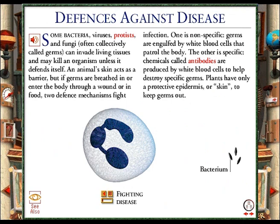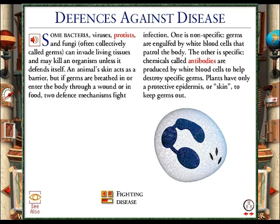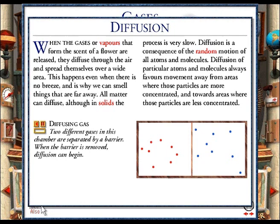When a white blood cell detects the presence of bacteria, which it does by the chemicals the bacteria release, it moves towards them. Once it is close enough, the white blood cell wraps itself around the bacteria, totally surrounding them. The white blood cell now releases chemicals that digest the bacteria. They will no longer be able to cause any harm.